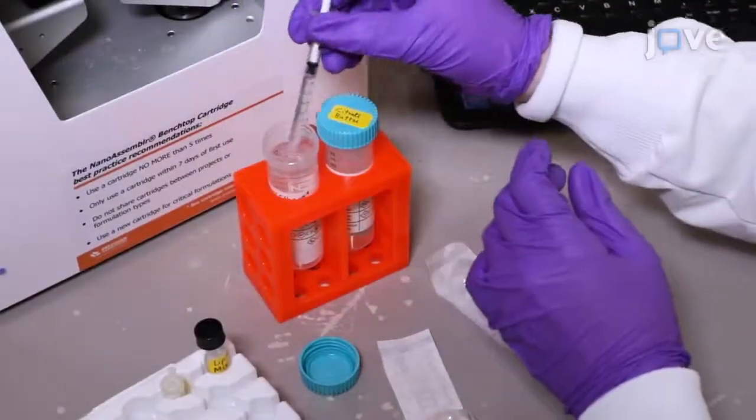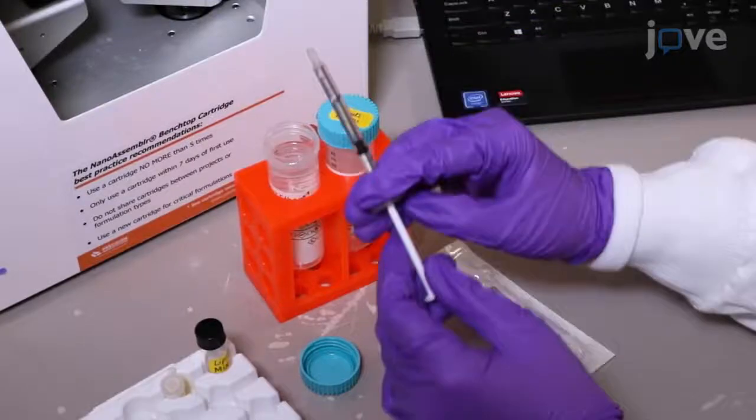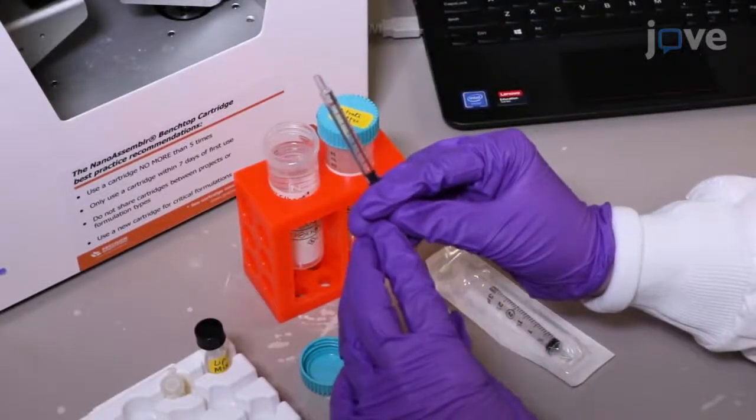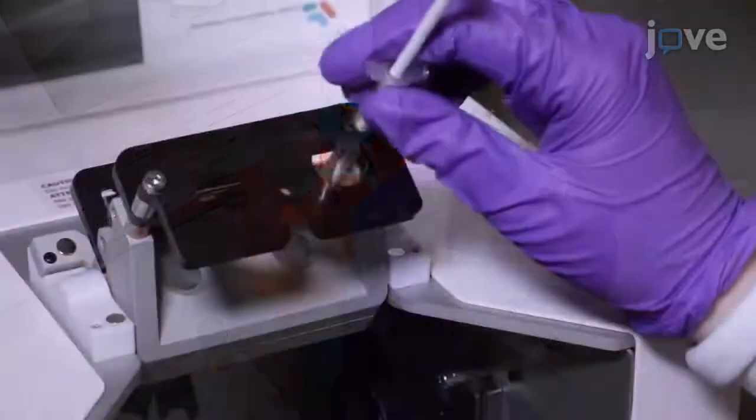Load at least 500 microliters of ethanol into a 1 milliliter syringe, taking care that there are no bubbles or air gaps at the syringe tip, and insert the syringe into the right inlet of the cartridge.